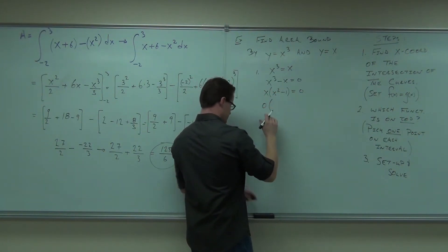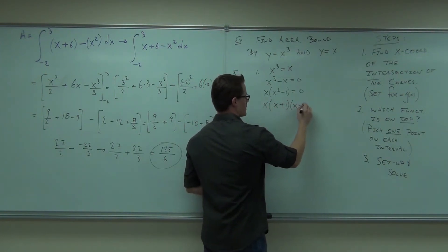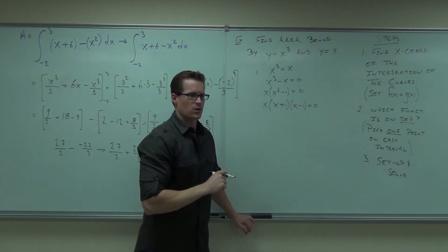Zero, or x equals zero, x plus one, x minus one. You get how many points? One, two, three, four. Three.